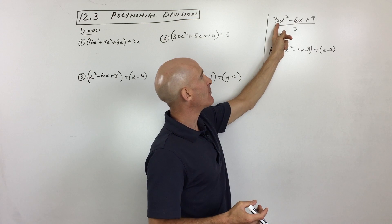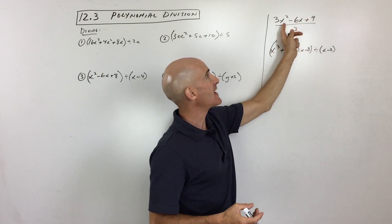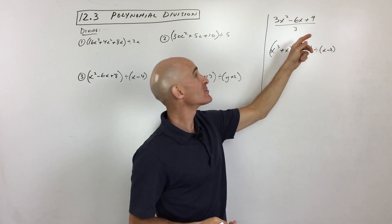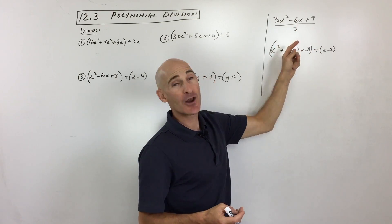So this first example, 3x squared minus 6x plus 9, you can see this is a trinomial, three terms, but it's divided by a monomial, one term.